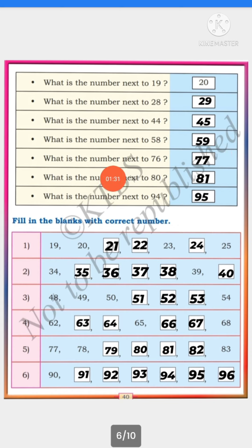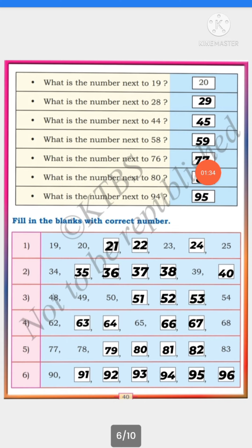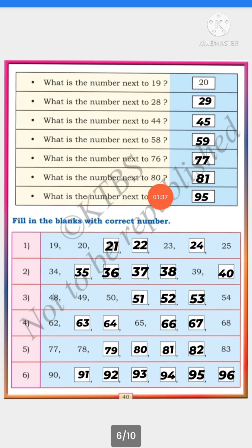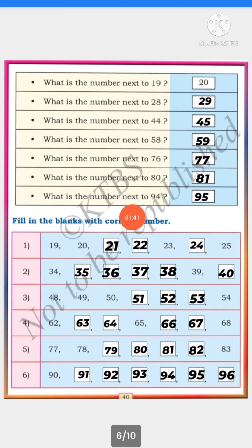What is the number next to 76? — 77. What is the number next to 94? — 95.